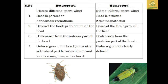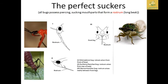In Heteroptera the head is prognathous and horizontal, while in Homoptera the head is deflexed — opisthognathous. Based on the forelegs, in Heteroptera they do not touch the head; in Homoptera they do touch the head. The beak arises from the anterior part of the head in Heteroptera and from the posterior part in Homoptera. The collar region between the labrum and foramen magnum is well-defined in Heteroptera but not well-defined in Homoptera. All bugs possess piercing-sucking mouthparts from the rostrum.